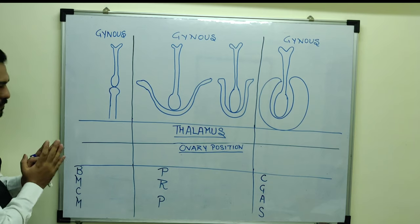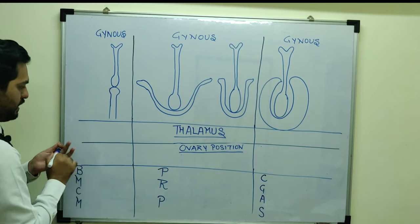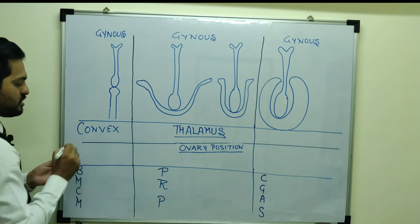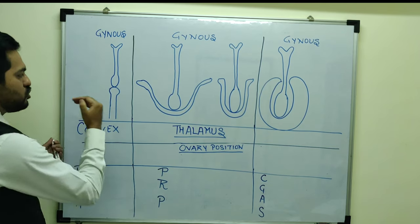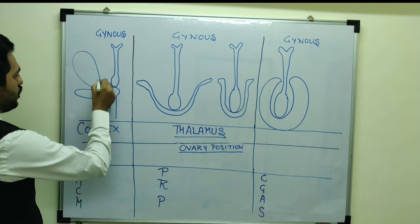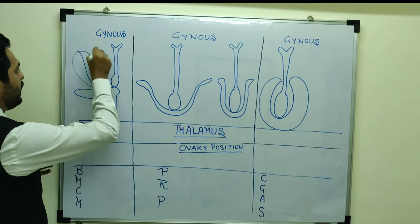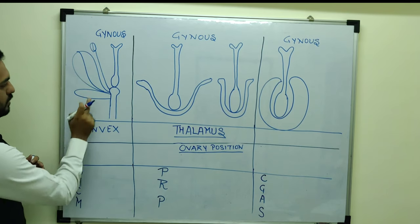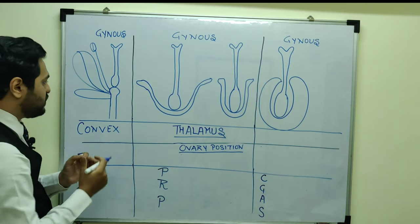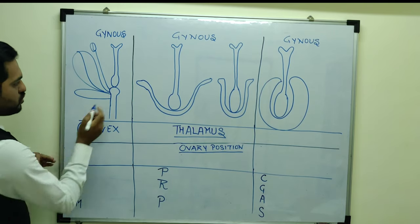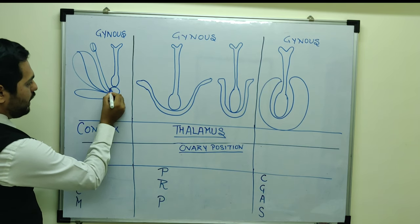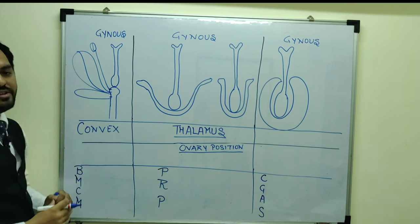Coming to the first diagram, the shape of the thalamus is convex shaped. On this convex shaped thalamus, in comparison to gynoecium, the whorl of calyx, the whorl of corolla, and the whorl of androecium — meaning sepals, petals, and stamens — all three are present below the gynoecium. So if you observe, the position of gynoecium is such that calyx, corolla, and androecium are all below the gynoecium.